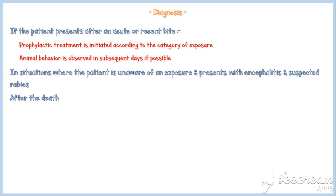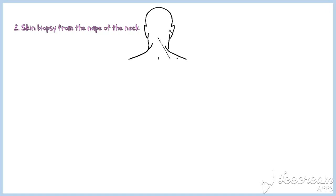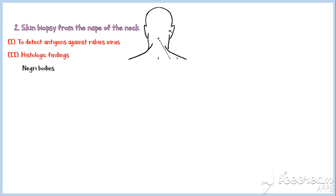Viral culture and PCR assays can be used to detect viral RNA in saliva and CSF samples. Skin biopsy from the nape of the neck can be used to detect antigens against the rabies virus in cutaneous nerves and for histologic findings, including Negri bodies. The virus can sometimes be directly visualized by electron microscope. Neuronal death is rare in histologic findings.